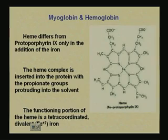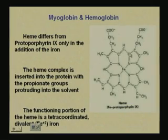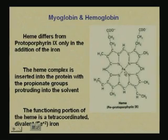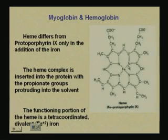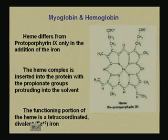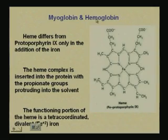The heme differs from protoporphyrin 9 only in the addition of the iron atom. The heme complex is inserted into the protein with the propionate groups protruding into the solvent. The functioning portion of the heme is this tetra-coordinated divalent Fe²⁺ iron, which is extremely important in the binding of oxygen required for transport and storage.